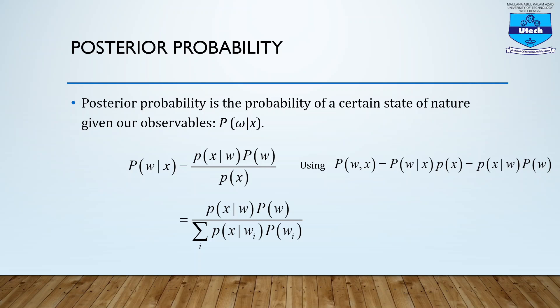Now let us go to the posterior probability. Posterior probability is the probability of a certain state of nature given our observables — that is, the probability of W, the state of nature, given our observables. The features that you have calculated are our observations. Given one particular feature x, what is the probability of W or one particular class given that feature x? This particular value can be calculated from the equation: probability of x given W, multiplied by probability of W, divided by probability of x.